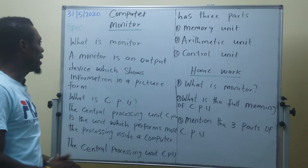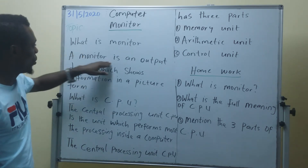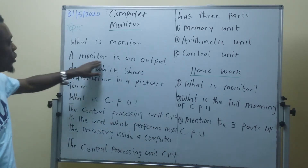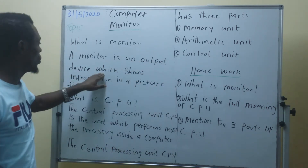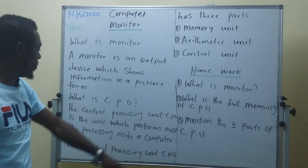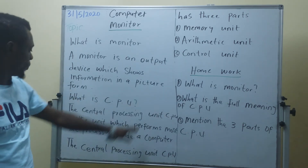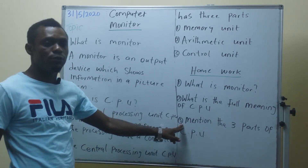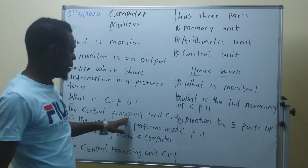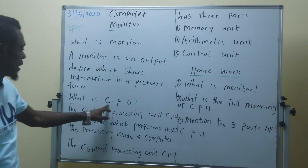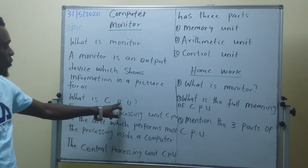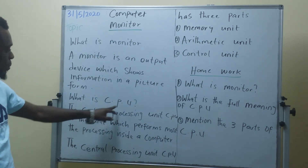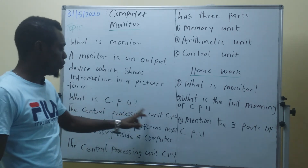I repeat again for the last time. A monitor is an output device which shows information in a picture form. What is the CPU? The central processing unit — CPU. The full name of CPU is central processing unit. C for central, P for processing, U for unit.